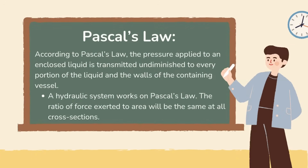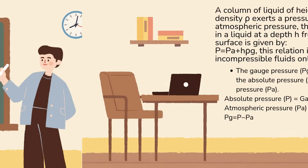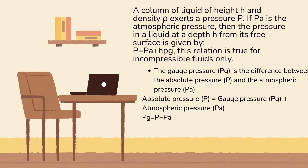Moving on to Pascal's Law. According to Pascal's Law, the pressure applied to an enclosed liquid is transmitted undiminished to every portion of the liquid and the walls of the containing vessel. A hydraulic system works on Pascal's Law. The ratio of force exerted to area will be the same at all cross-sections. A column of liquid of height h and density rho exerts a pressure p. If pA is the atmospheric pressure, then the pressure in a liquid at a depth h from its free surface is given by p = pA + h·rho·g. This relation is true for incompressible fluids only.